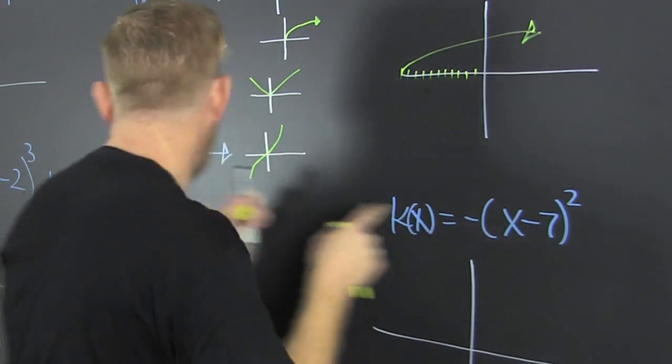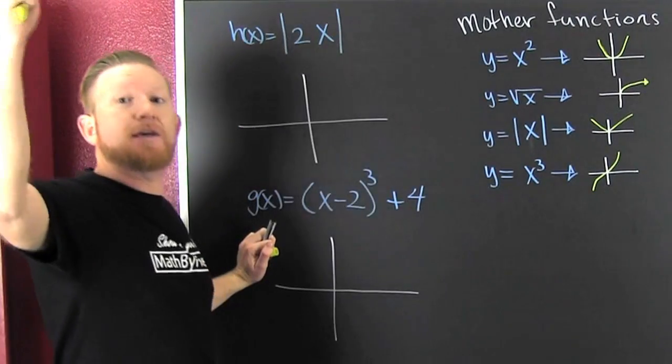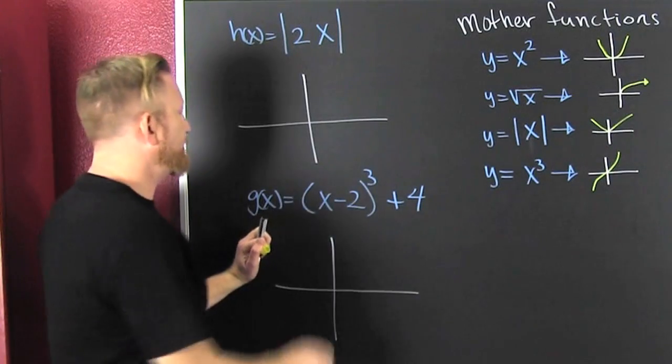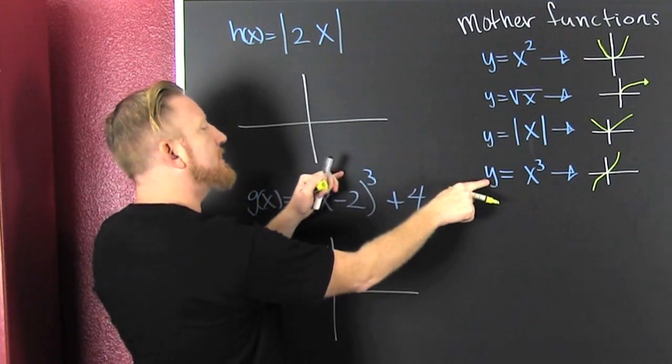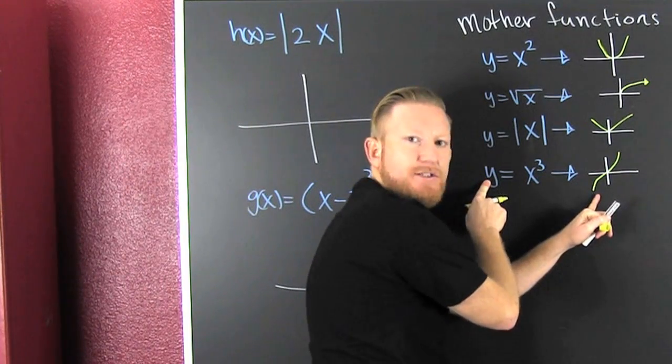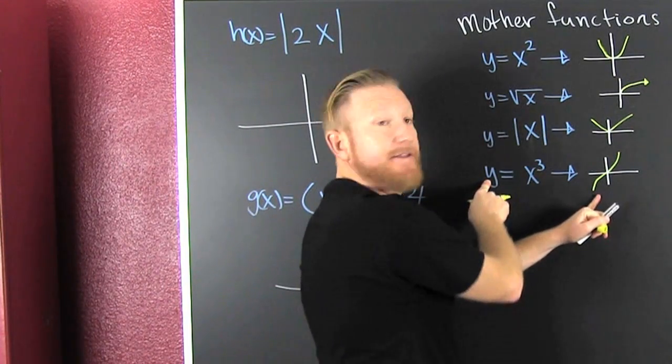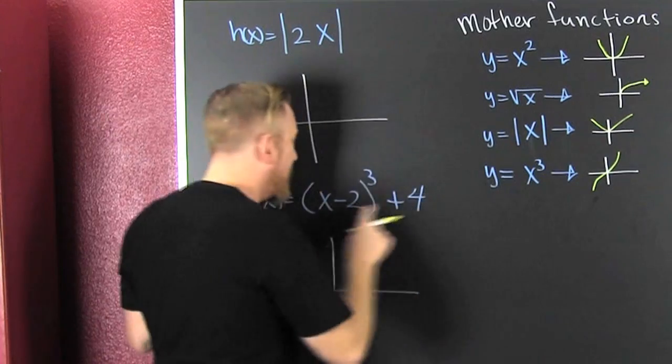We ain't ready for that yet. Let's go over here - we need to pick the proper mother function. If we look at this, we see it's a cube, so it's gonna have a mother function that looks like this - the rock star. What are we gonna do with this?